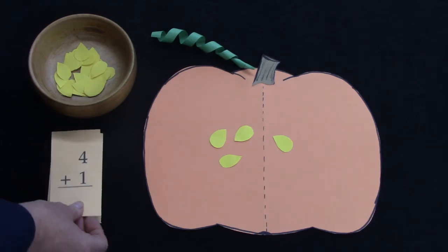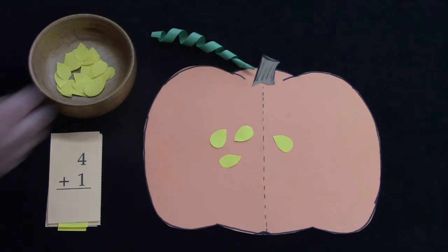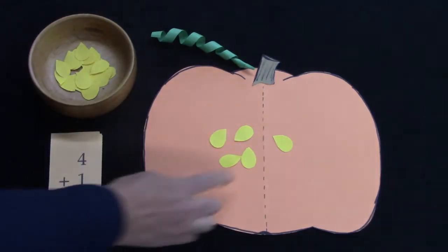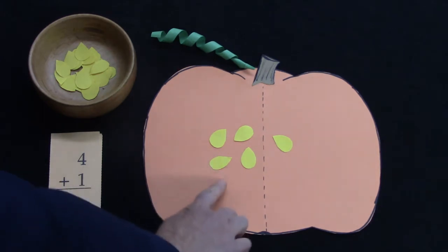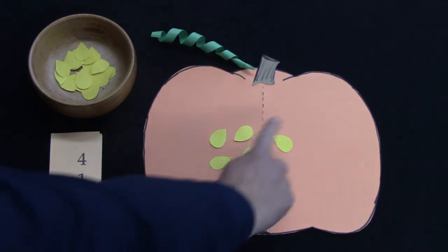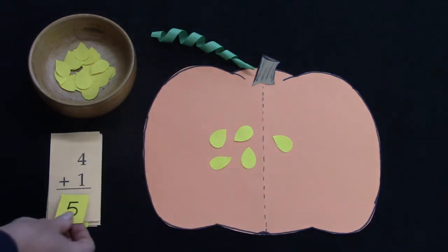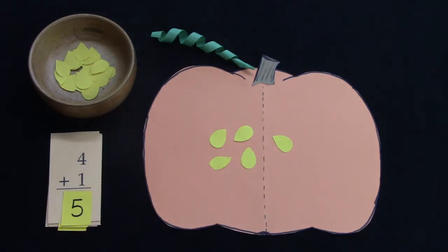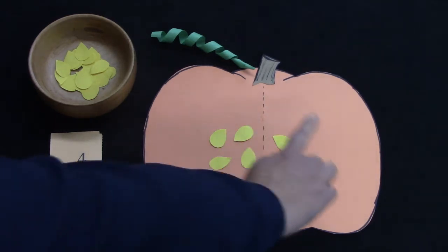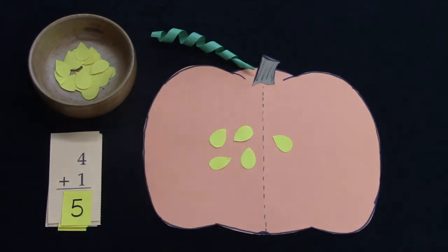What if I have four plus one? Well, I'm going to take another pumpkin seed and put it right there. Now, I could count all of them. I could say one, two, three, four, five, and then I would know that four plus one is five. Or I could just count on. I have four on this side. Four. The next number would be five.